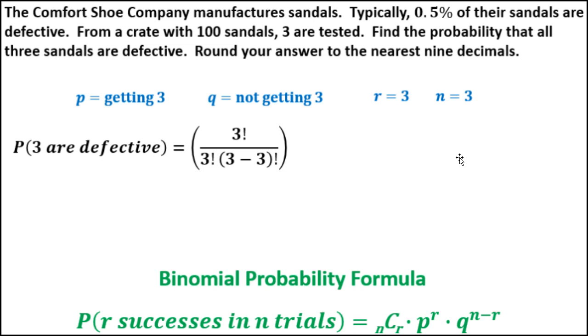Then we multiply that by the probability of success. And we know that the probability of success, in this case that the shoe is defective, is 0.05%, which is 0.005.